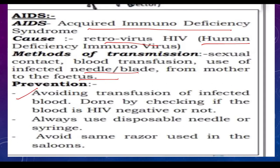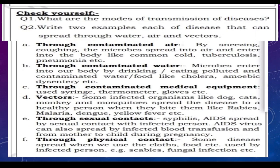Prevention methods for AIDS: avoid transfusion of infected blood by checking if the blood is HIV negative. Always use disposable needles or syringes. Avoid sharing the same razor blade in saloons.